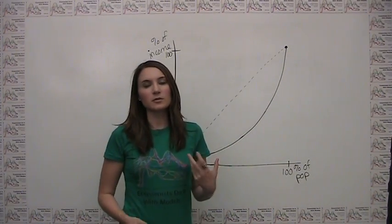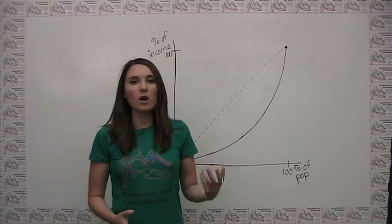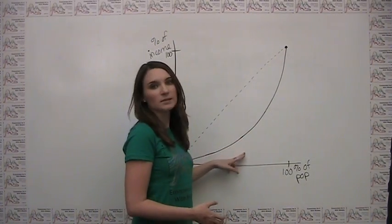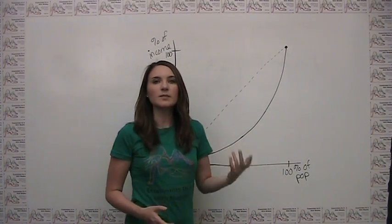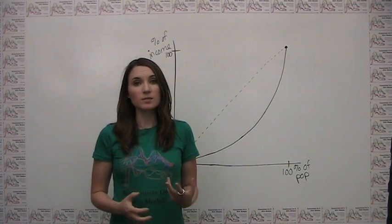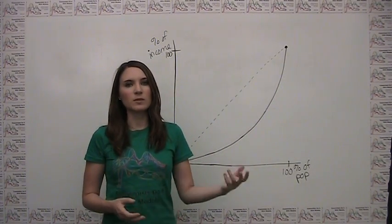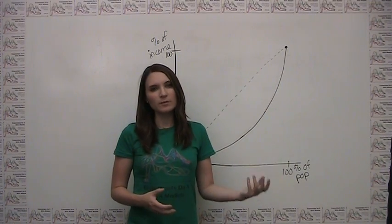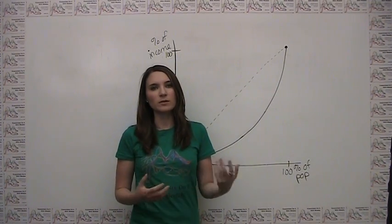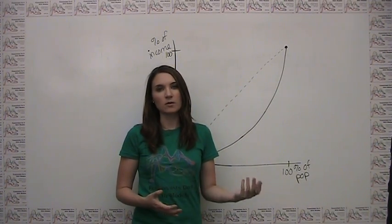Because of the way that the Lorenz curve is constructed, it will always be bowed downwards as in the example here. This is simply because it's mathematically impossible for the bottom 20% of earners to make more than 20% of the income, for the bottom 50% of earners to make more than 50% of the income, and so on.